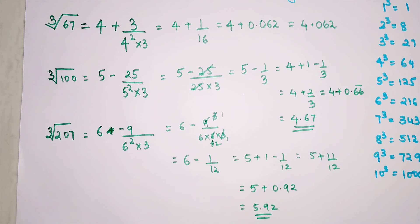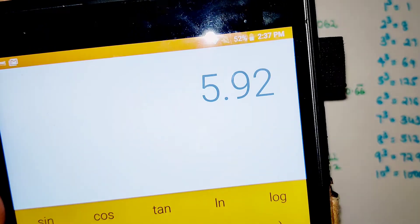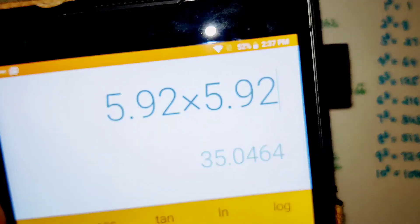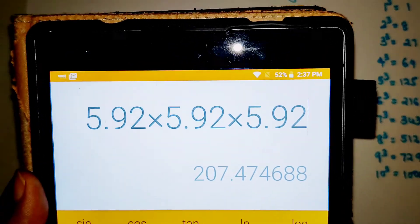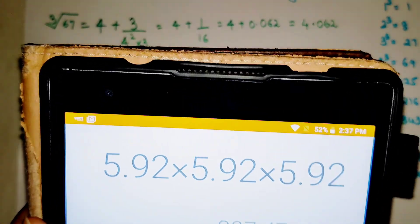Students, you won't believe, this is the actual exact answer. I'll show you: 5.92 into 5.92 into 5.92 equals 207. Yes!